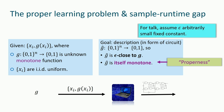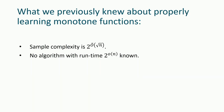For this talk, we assume epsilon is an arbitrarily small constant. The sample complexity for properly learning monotone functions is 2 to the o-tilde of root n. That's sublinear in the domain size 2^n, not polynomial in n, but also not 2^n. Until now, we did not know an algorithm with runtime that was 2 to the little-o of n, even given query access to the function.